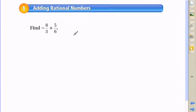So let's learn how to add rational numbers. We're asked to find the sum here of negative 8 thirds and 5 sixths.